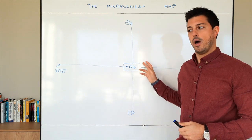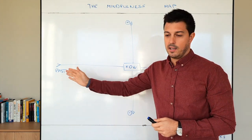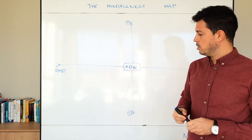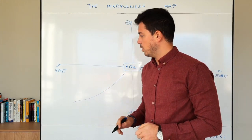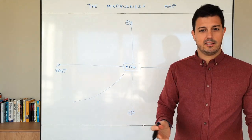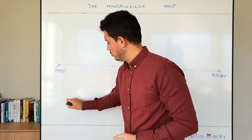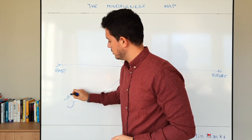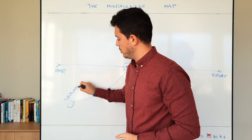There are four quadrants. Let's start with this quadrant: going to the past and to the negative. Usually when we come to the past, to a place in the past that is very negative, we would tend to call this a trauma, a traumatic experience.